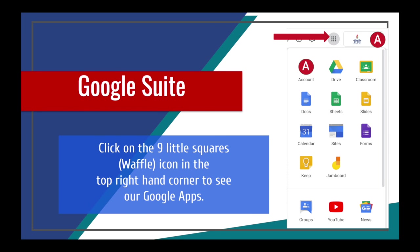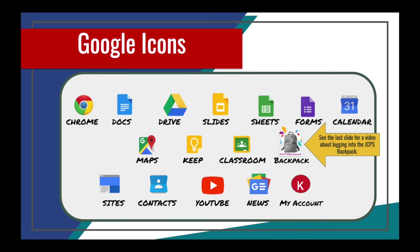Now, your child is logged in to their JCPS Google account. You should see a circle with the first initial of your child, or they may have added an image. The Google Suite has several different apps available for your student. To access these apps, you will click on the nine little squares in the top right corner, also known as the waffle.